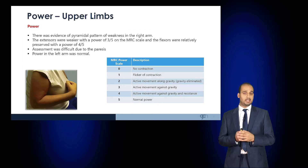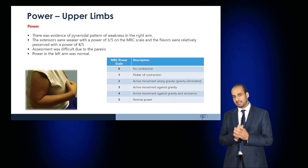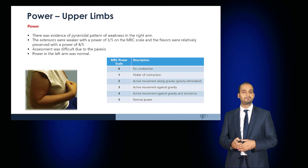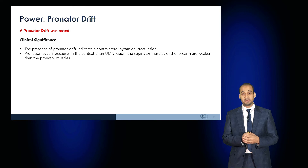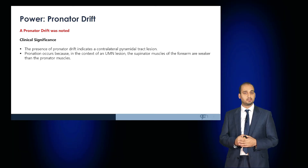Power in the limbs is graded according to the MRC scale from zero to five, with zero being no contraction and five being normal power. With pyramidal weakness in the upper limbs, the extensors may have a power of three out of five and the flexors would be relatively preserved at four out of five. Assessment can be difficult due to paresis, and power in the contralateral arm would be normal. A pronator drift may be present, as in pyramidal lesions the pronator muscles are relatively stronger than the supinator muscles.